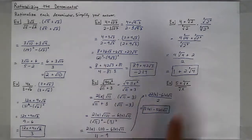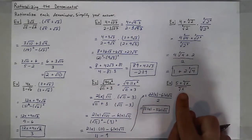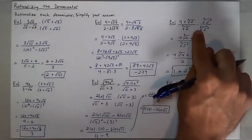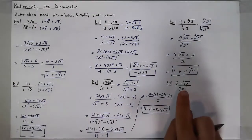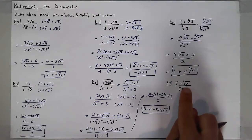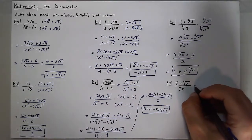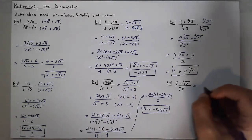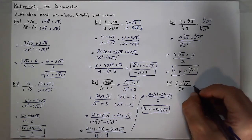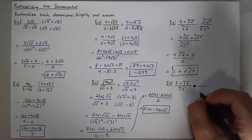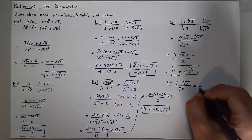Even with the fourth root, I'm not going to use the same method as for a cube root, because I want something to the fourth power within that radical to get rid of it. So I'm going to multiply by the fourth root of x to the third.